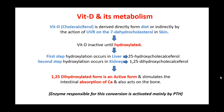Vitamin D, which is cholecalciferol, is derived either directly from the diet — from the food we take — or indirectly by the action of ultraviolet radiation from the sun on 7-dehydrocholesterol, which is present in our skin. This vitamin D is inactive until it is hydroxylated, and this process occurs in two steps in two different organs of the body.